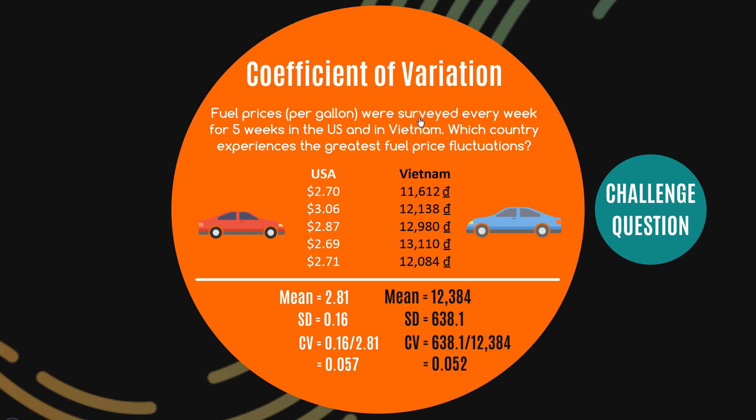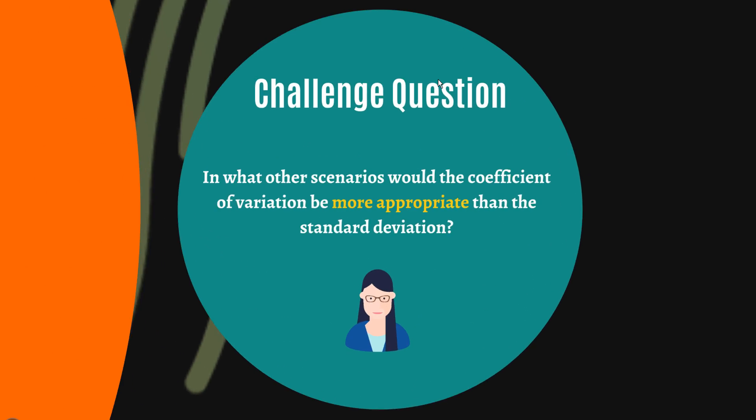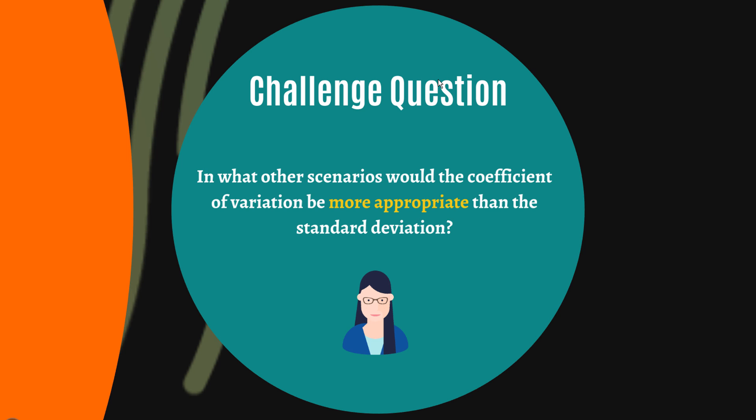So that's a clear example of where the coefficient of variation is quite useful to us. And my challenge question extends that a little bit. I just want to see what you can come up with here. In what other scenarios would the coefficient of variation be more appropriate than the standard deviation?